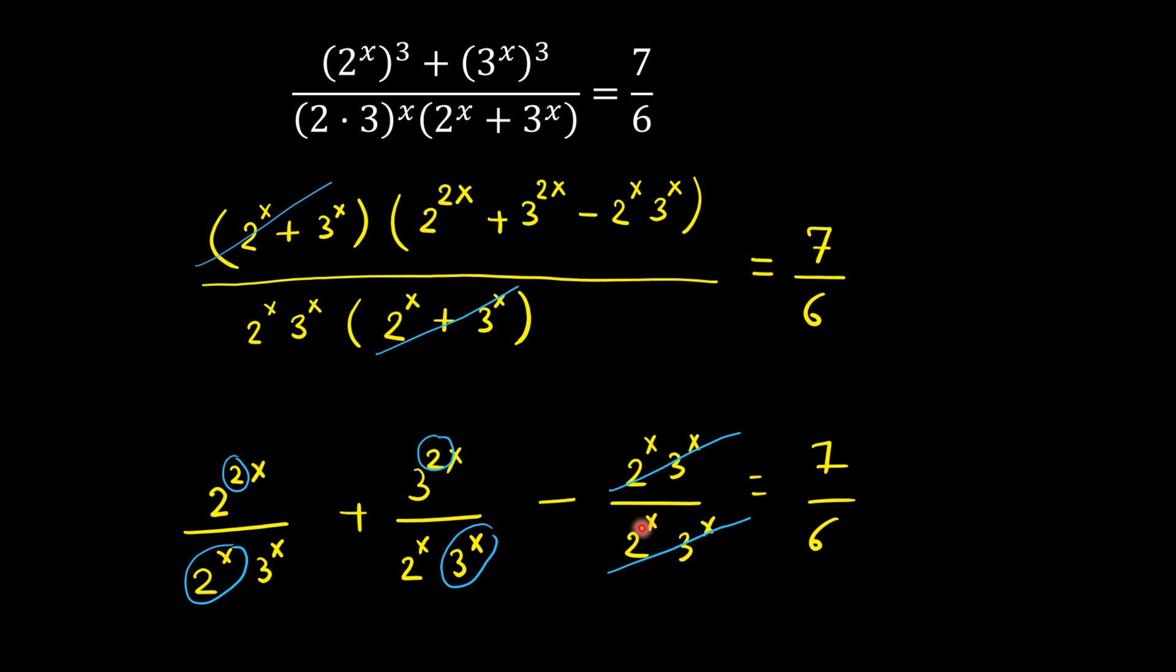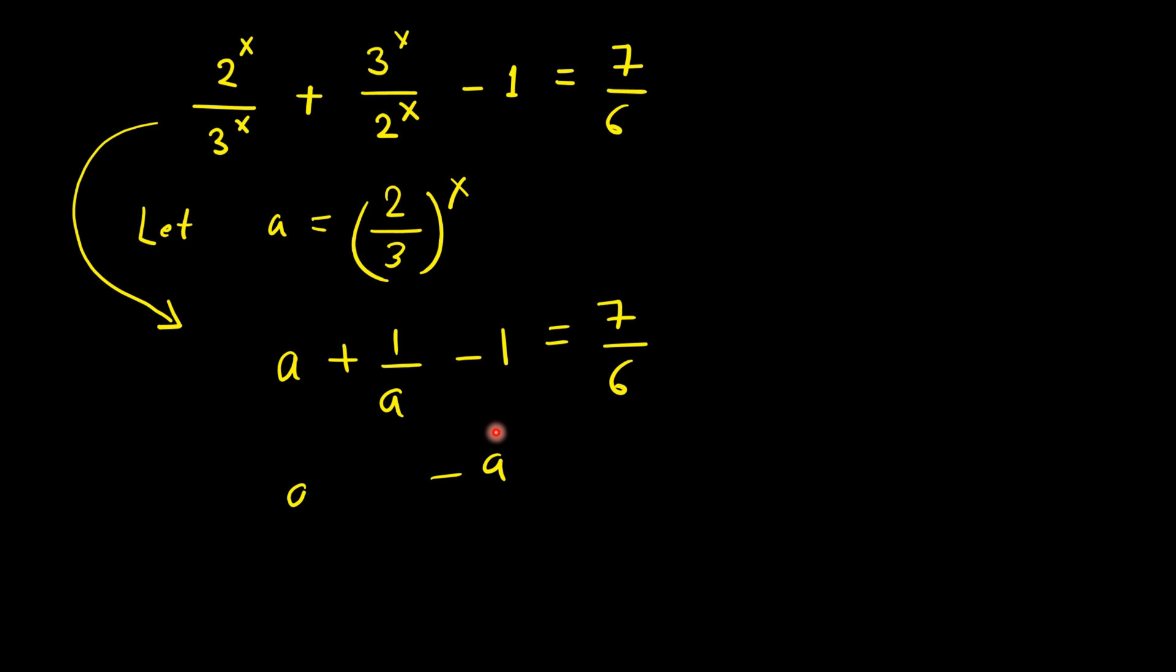Let's rewrite. Now you can see a pattern that (2/3)^x and here it's the reciprocal of that. Let's simplify this equation. We will assume that (2/3)^x equals a, so now this equation becomes a + 1/a - 1 = 7/6.